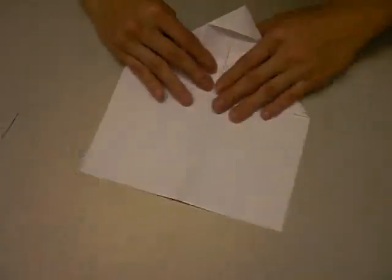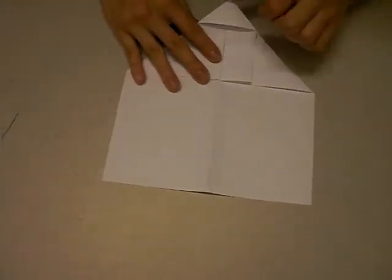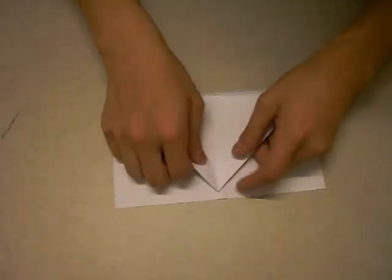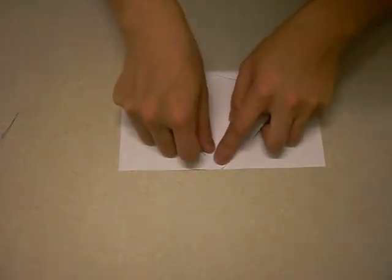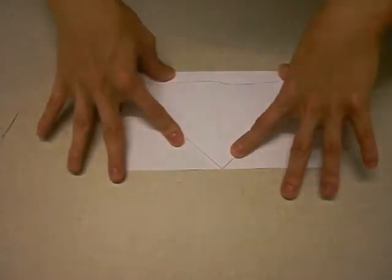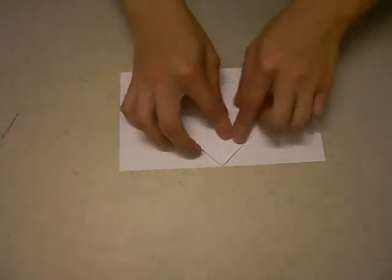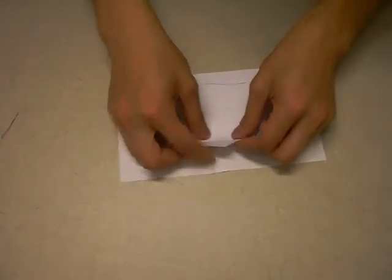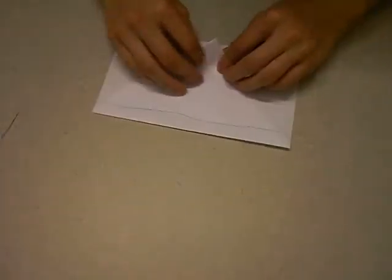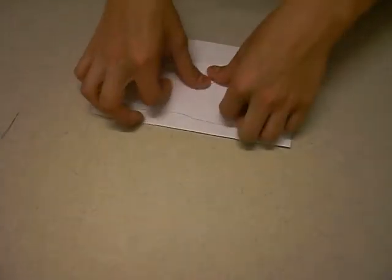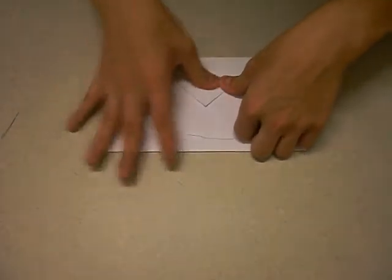Turn it over. Fold the top to the top. From here, fold the triangle at the top. It's already going to be partially folded, so you just need to fold it over.